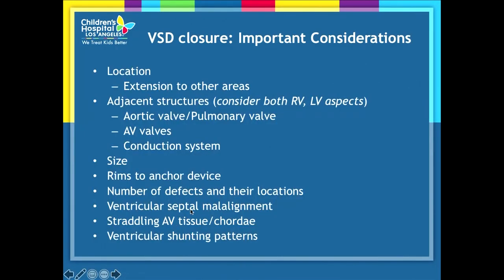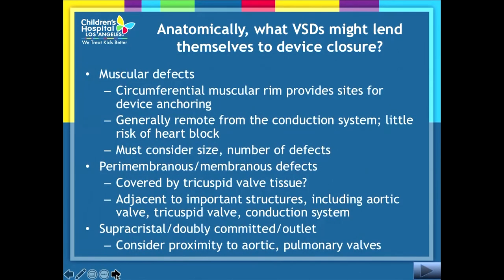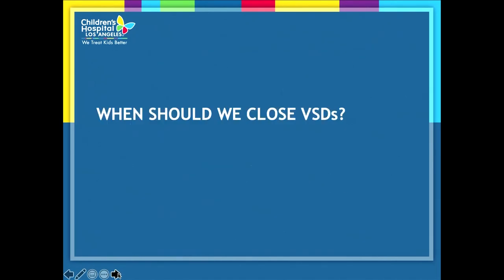The important considerations for VSDs are location, adjacent structures, size, rims to anchor the device, number of defects and their locations, and whether there is a strand of AV valve tissue. The types that lend themselves most likely to device closure are muscular, perimembranous, and possibly supercrystal, though that is harder to know.